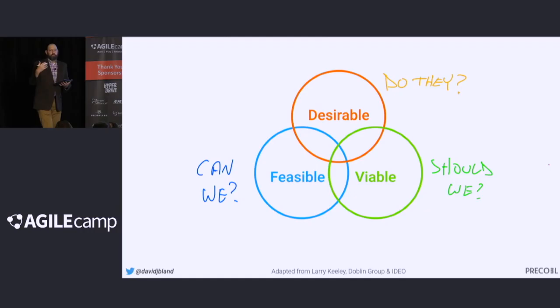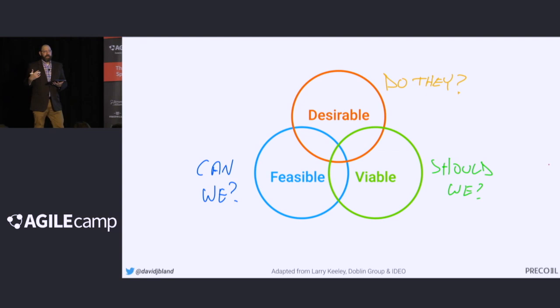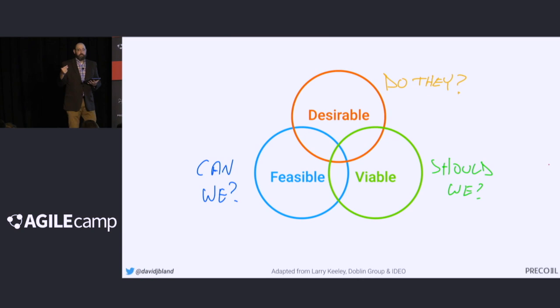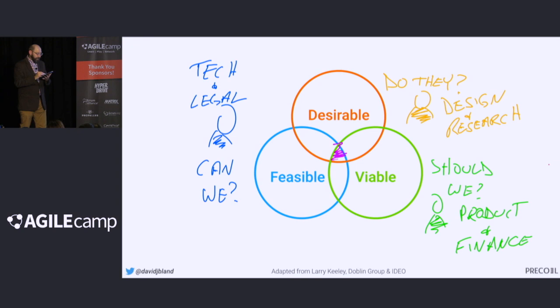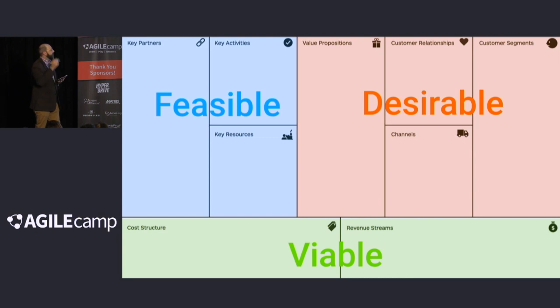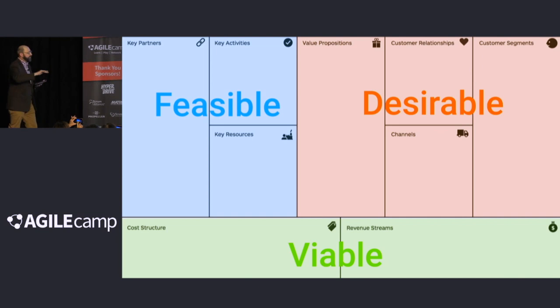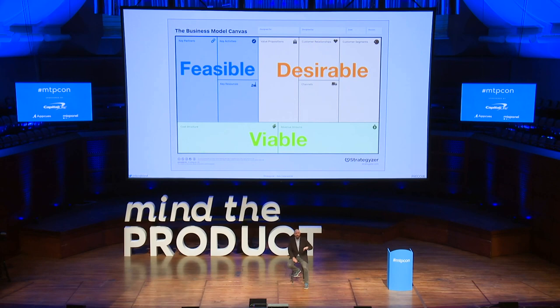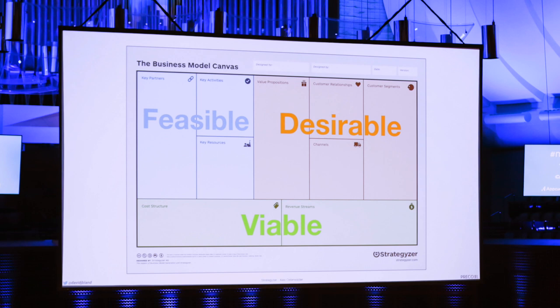You should also have a moral compass on 'should we' as well. And then feasibility being 'can we.' When we say 'can we,' I like thinking about beyond just technical feasibility and more into overall feasibility. Are we going to hit governance or regulations that prevent us succeeding with this sprint? And we fail as a team if we're not addressing all three of these.